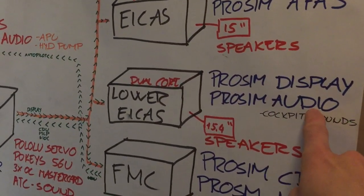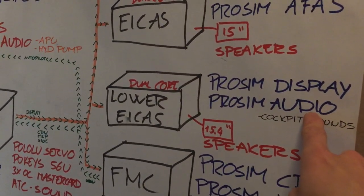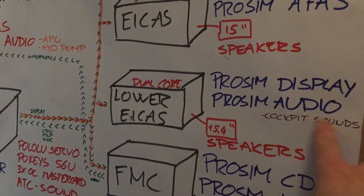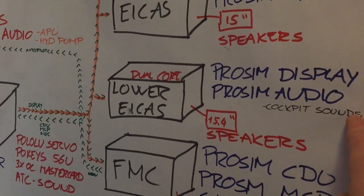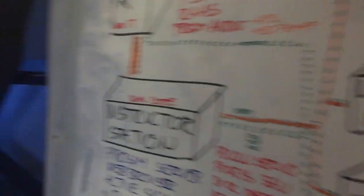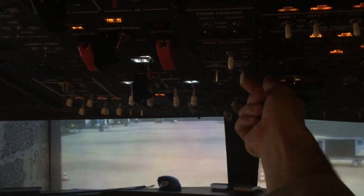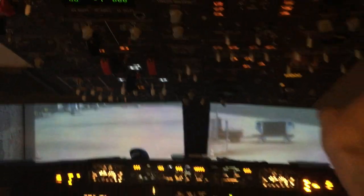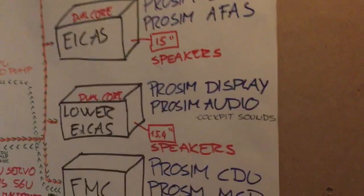ProSim audio plays all the cockpit sounds — like you heard before. If I flick the seatbelt switch — there — that ding is coming from speakers over the windows, controlled by this computer.